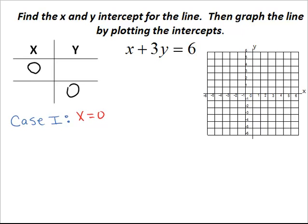What we will do here is wherever we have an x we will plug in a value of 0. So in this case we have 0 plus 3y equal to 6. Since we have 0 there we can then write 3y equal to 6.